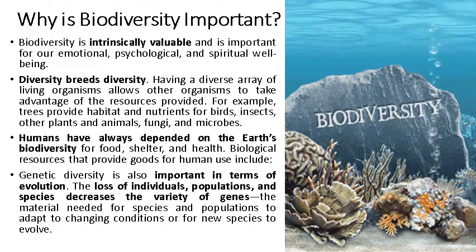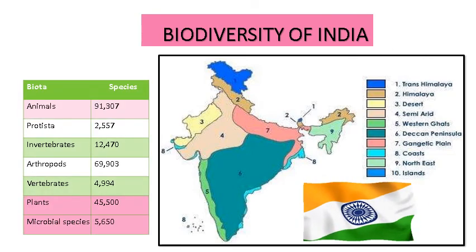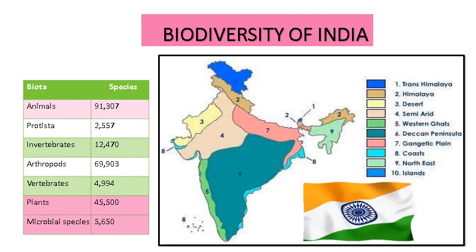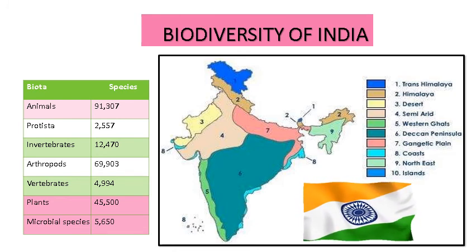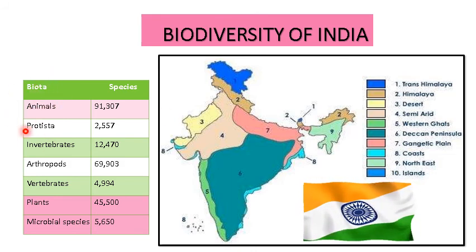This slide shows the biodiversity of India. The Indian landscape poses a rich biodiversity, displayed over the geographical length and breadth of the country. India contains around 10 biogeographic zones and shows exemplary diversity of ecological habitats like alpine forests, grasslands, wetlands, and coastal and marine ecosystems. As you can see, there are different biota — animals, protists, and other living organisms — and these represent the different species.